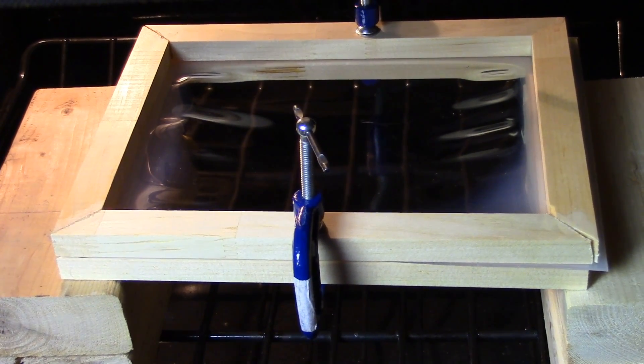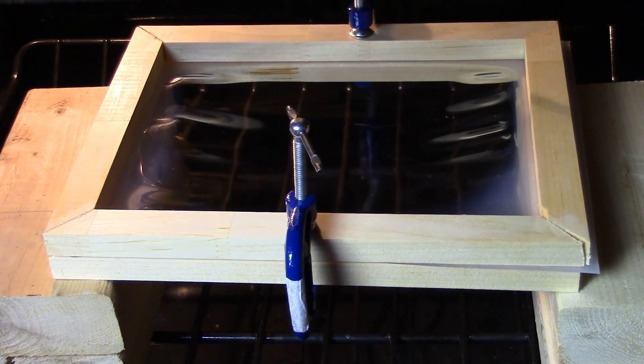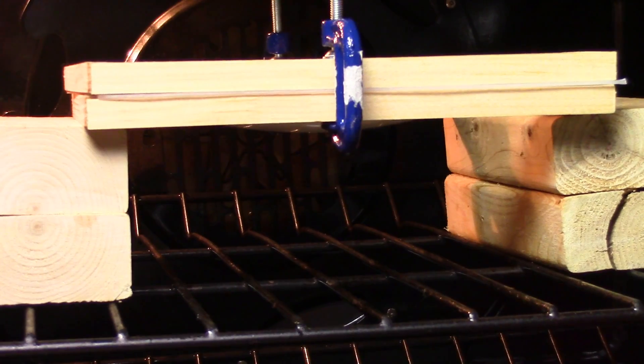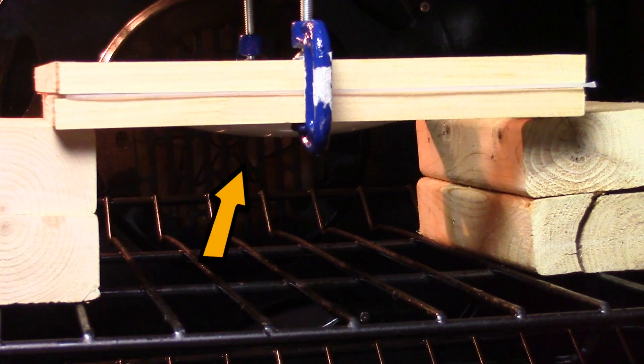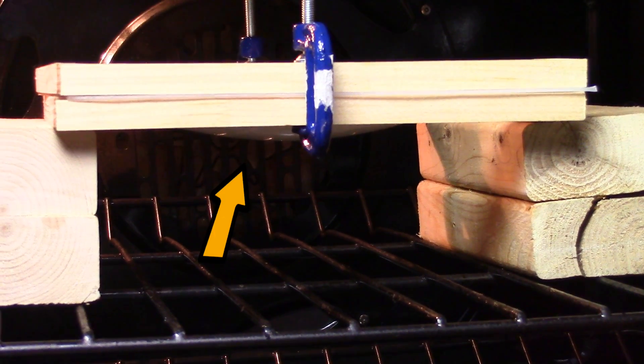As the plastic gets hotter, it'll start becoming transparent and the bottom will look droopy. Here's what it looks like as it's sagging. You want it to sag about 2 inches down. That's when you know it's ready.